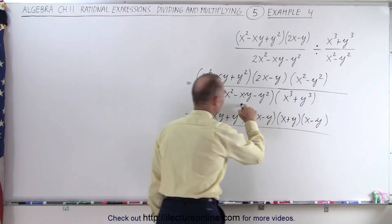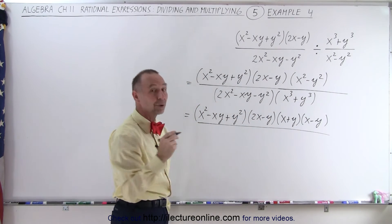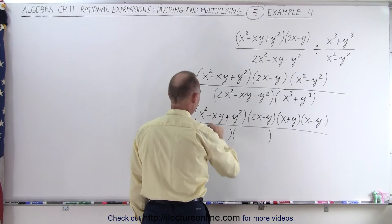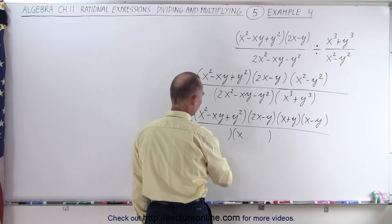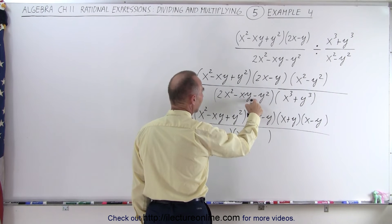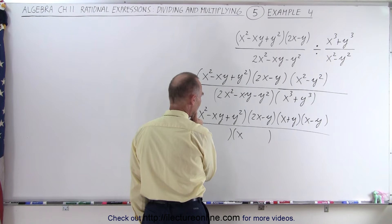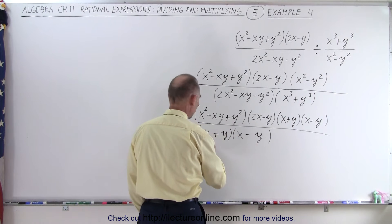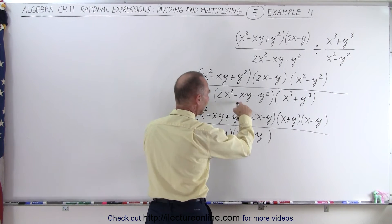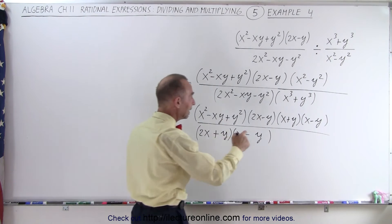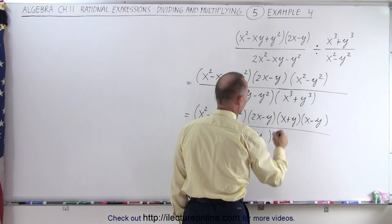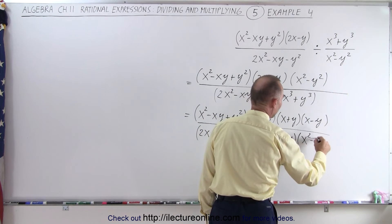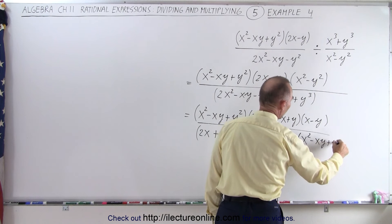In the denominator, 2x squared minus xy minus y squared can probably be factored. I have 2x and x, giving 2x squared. With a negative y and a positive y: 2 times negative is negative 2, plus 1 gives negative 1 in the middle — so that works. And here we have the sum of cubes, x cubed plus y cubed, which can be written as x plus y times x squared minus xy plus y squared.